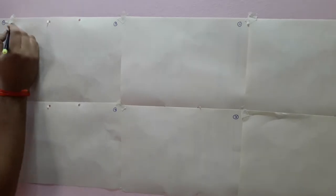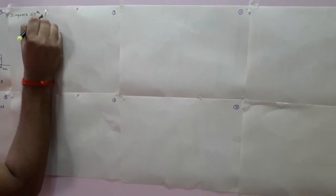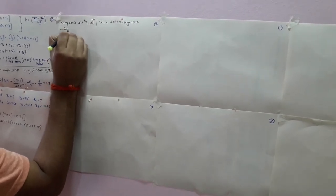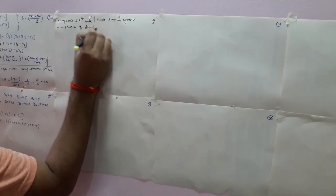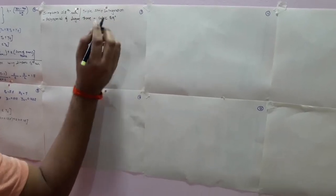Good morning friends. We'll discuss the next methodology, that is Simpson's 3/8 rule, also called triple strip integration. This methodology uses a polynomial of degree 3, meaning it is a cubic equation.